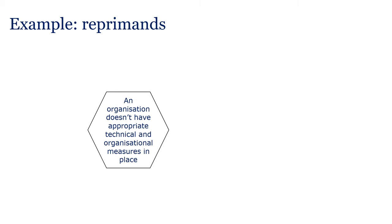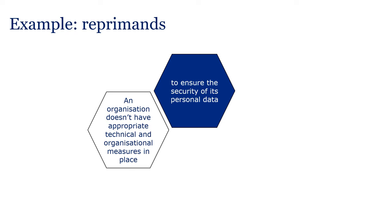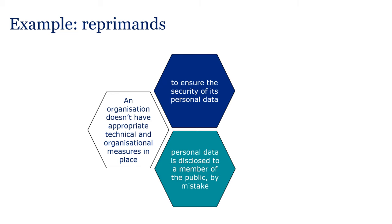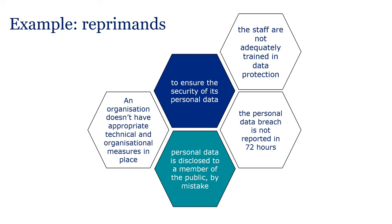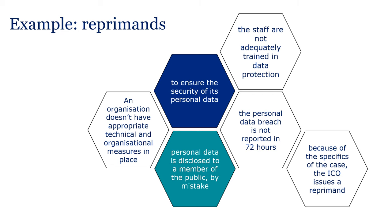In another example, an organisation doesn't have appropriate technical and organisational measures in place to ensure the security of its personal data. This leads to the disclosure of personal data to a member of the public by mistake. Staff are not adequately trained in data protection, and the personal data breach is not reported within 72 hours. Because of the specifics of the case, the ICO issues a reprimand.